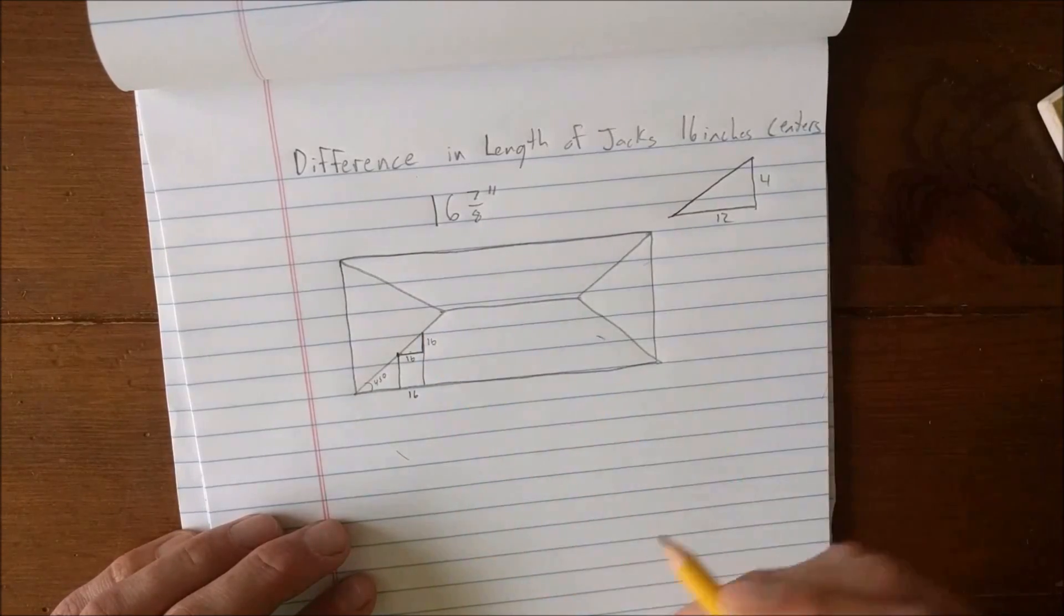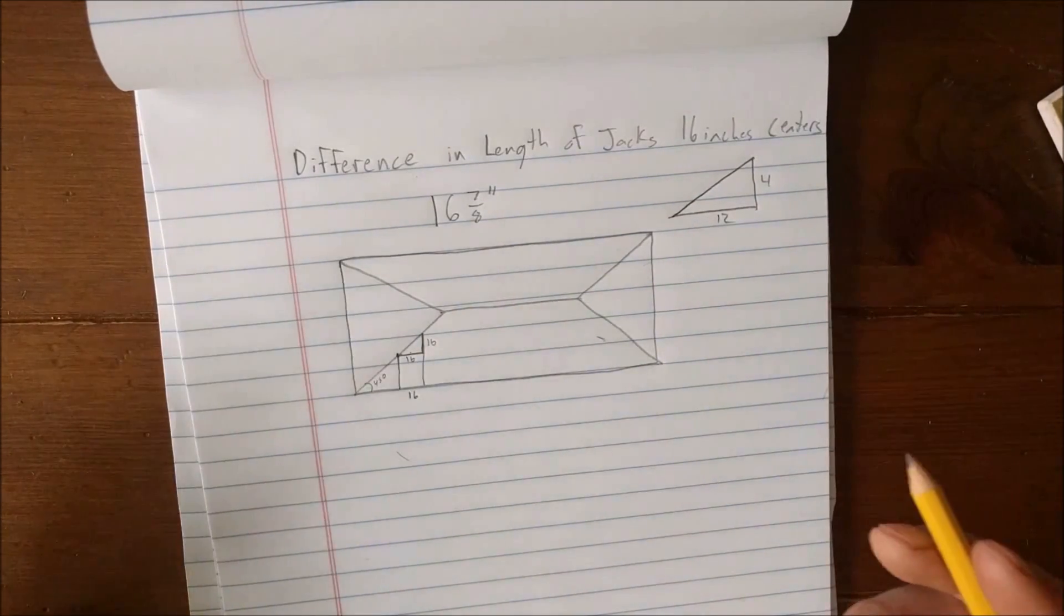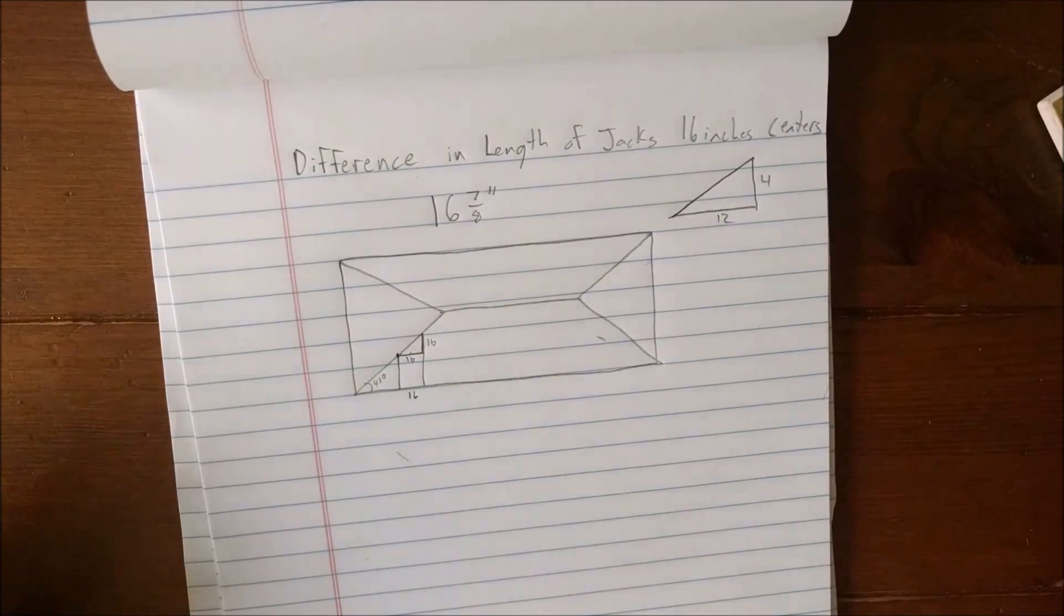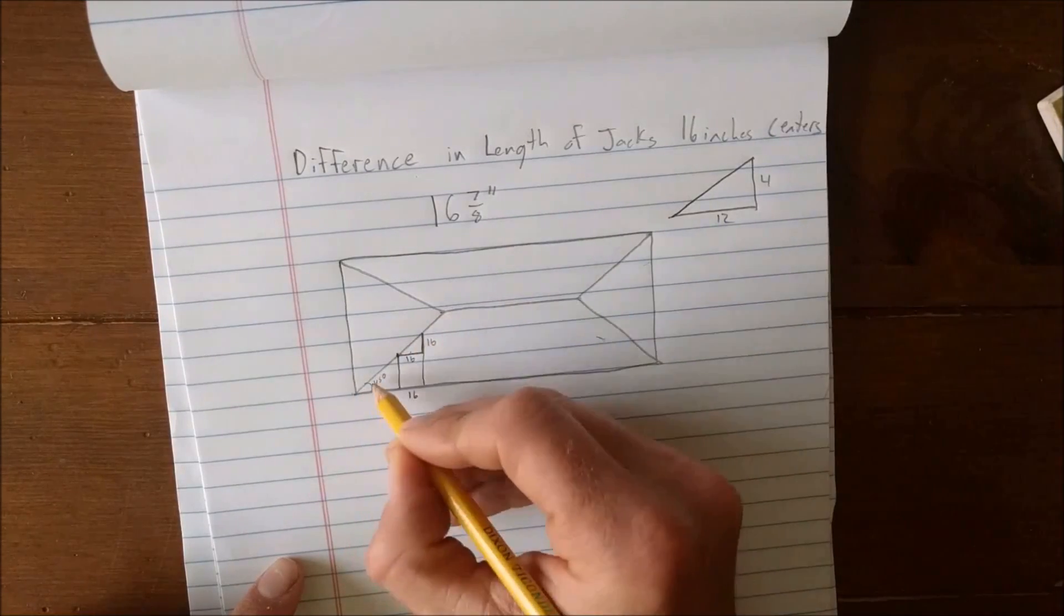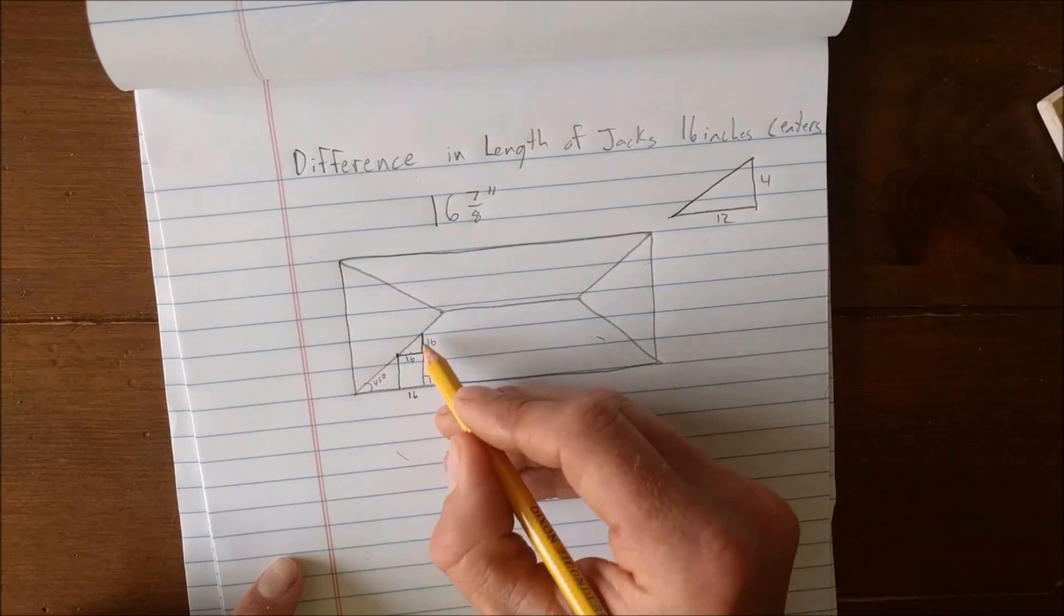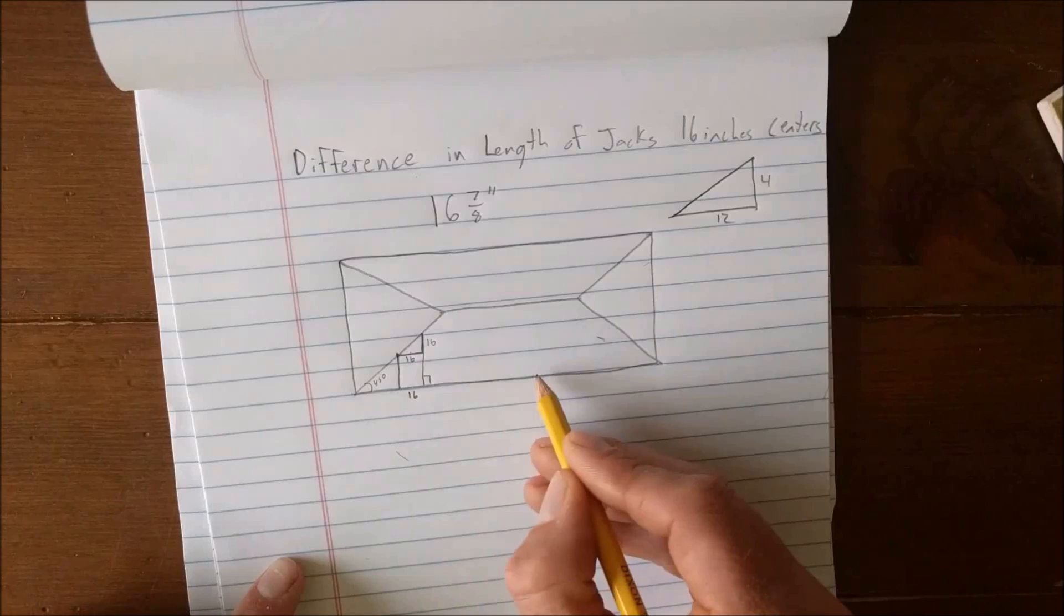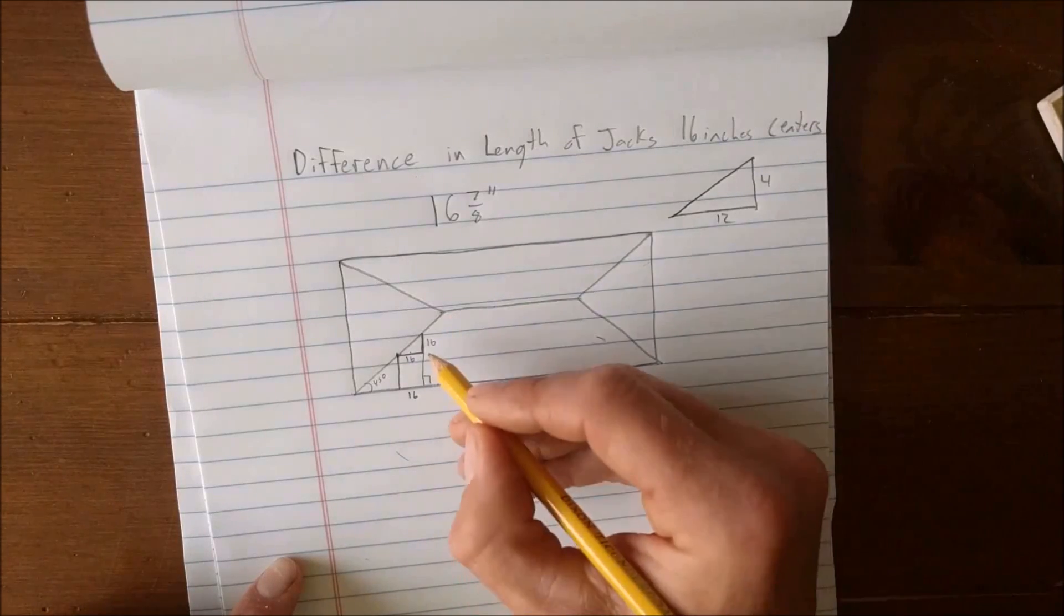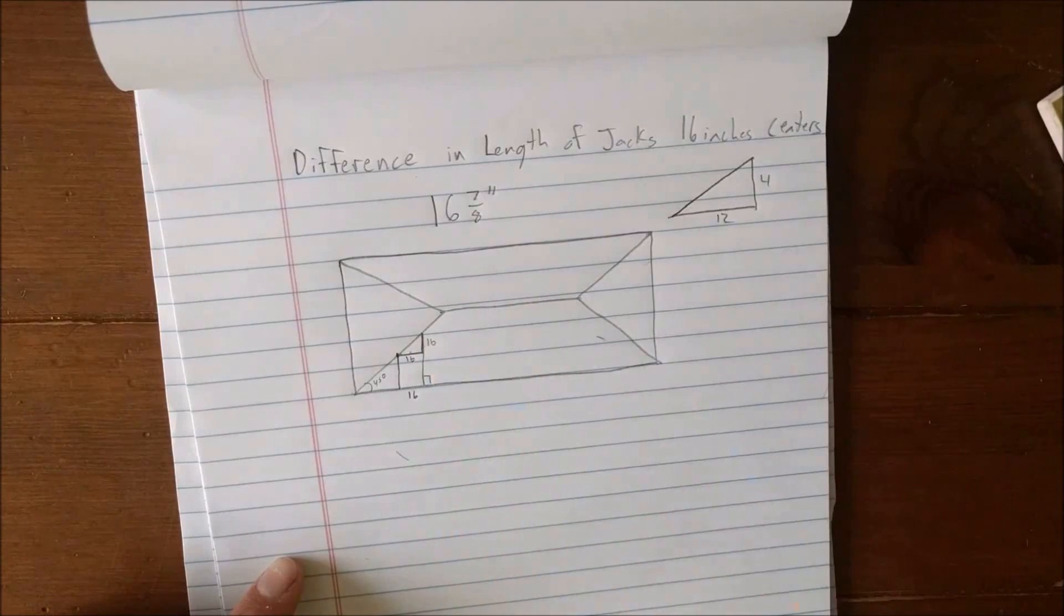Now when I go to find this length I gotta ask, well am I talking about a common rafter or am I talking about a hip rafter? A hip rafter goes this way, 45 degree angle, but this is actually a 90 degree angle between the hip jack and either the plates or the ridge board. So I'm going to use common rafter formulas just like the ones we developed in the last video.